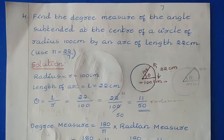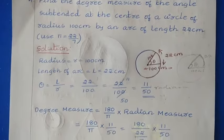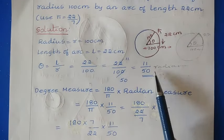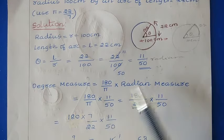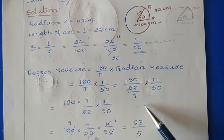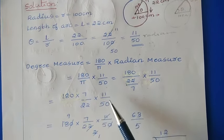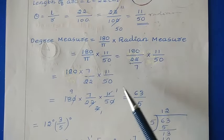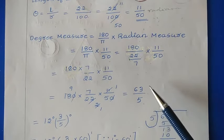The question asks for degree measure, so we convert: degree measure = (180/π) × radian measure = (180/π) × (11/50). Since we're finding degree measure, replace π with 22/7. So: 180 × (7/22) × (11/50). After all cancellations, we get 63/5. — correction: 63/5.